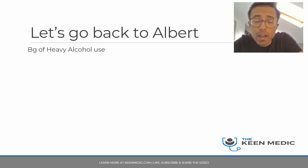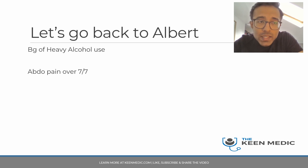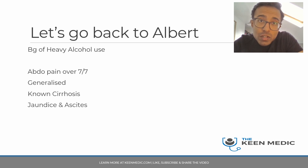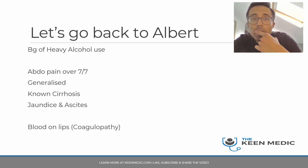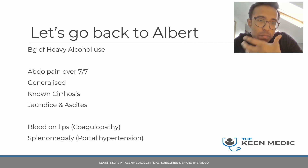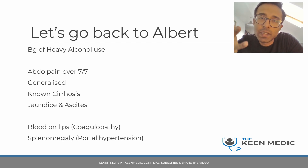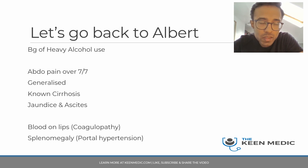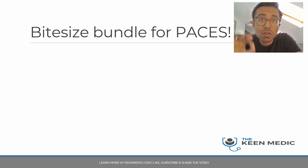Putting it all together: Albert has a background of heavy alcohol use, a week's history of generalized abdominal pain, and known liver cirrhosis. He now has jaundice and ascites on top of his cirrhosis, coagulopathy evidenced by old blood on his lips, and splenomegaly confirmed on CT — indicating portal hypertension secondary to cirrhosis. All pieces of the jigsaw come together.